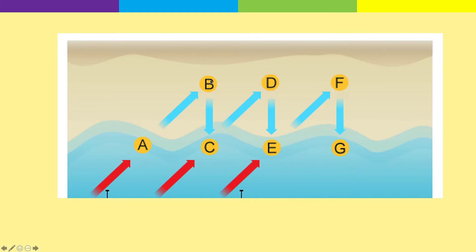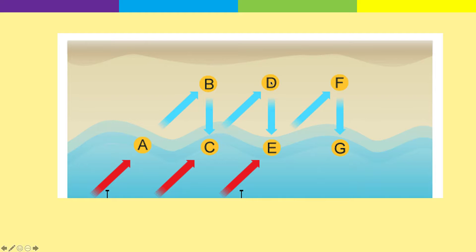Now when we get to point B, gravity comes into it. Gravity pulls the material — the sediment, the pebble — back into the sea. Again, the prevailing wind still pushes that sediment along the beach at about a two o'clock angle on this example, taking us to point D. Then gravity again pulls the material back into the sea.